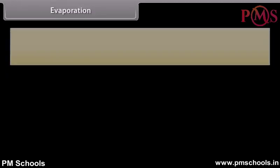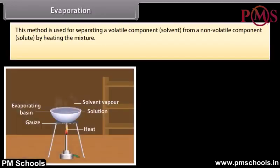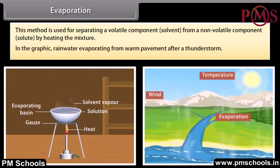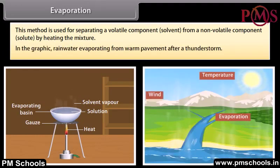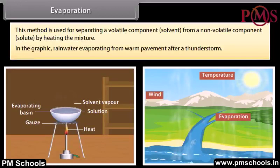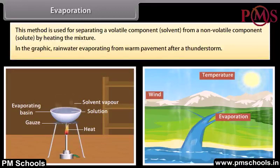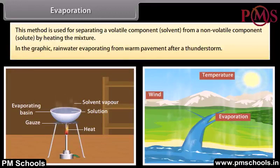Evaporation: This method is used for separating a volatile component (solvent) from a non-volatile component (solute) by heating the mixture. An example is rain water evaporating from warm pavement after a thunderstorm.